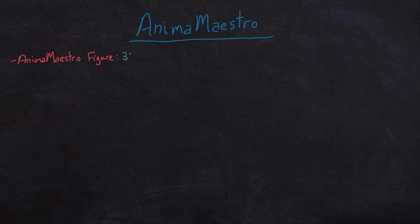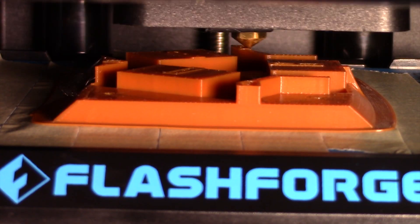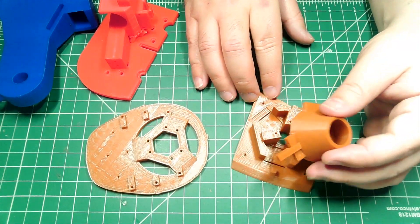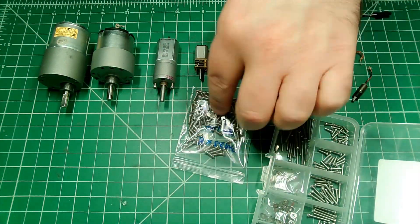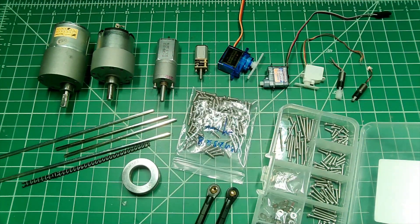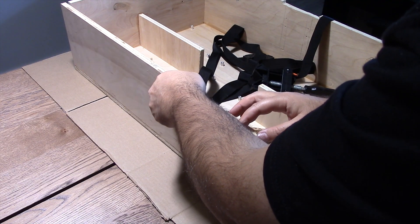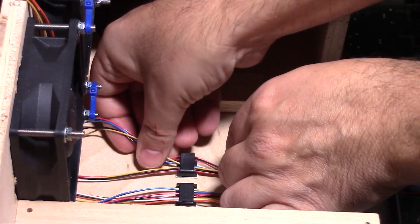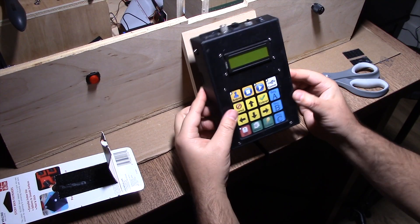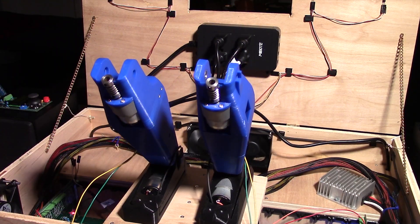The first series of videos is called Anima Maestro Figure. It will focus on the design, fabrication, and assembly of the actual animatronic. We will look at the 3D modeling process and watch actual 3D printings of some parts. The series will also showcase various mechanical components including DC and servo motors of all sizes, nuts and bolts, metal rods, plastic chains, ball bearings, and even some Lego pieces. The figure is mounted on a wooden Stage Box containing all the electronics and power supplies needed to animate it. This series will also include the actual assembly and testing of the animatronic.